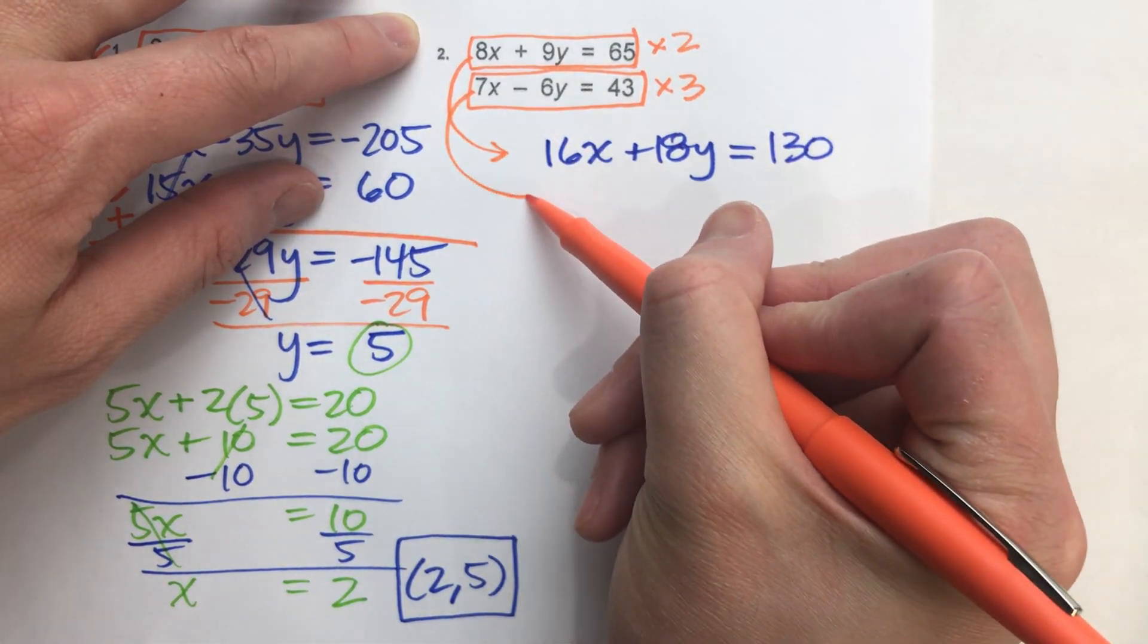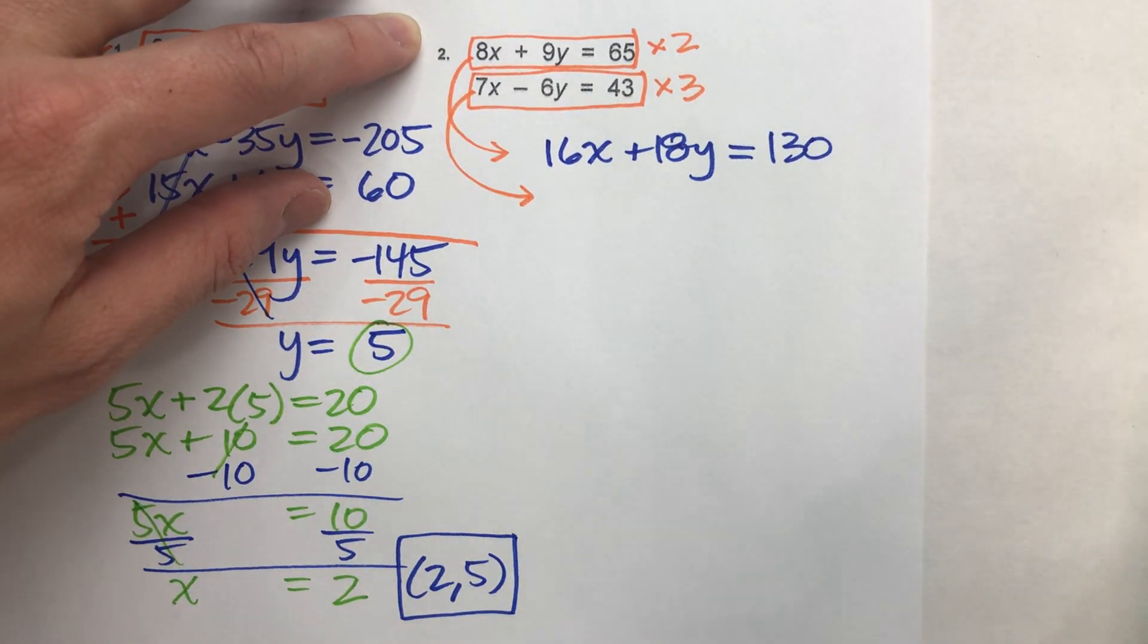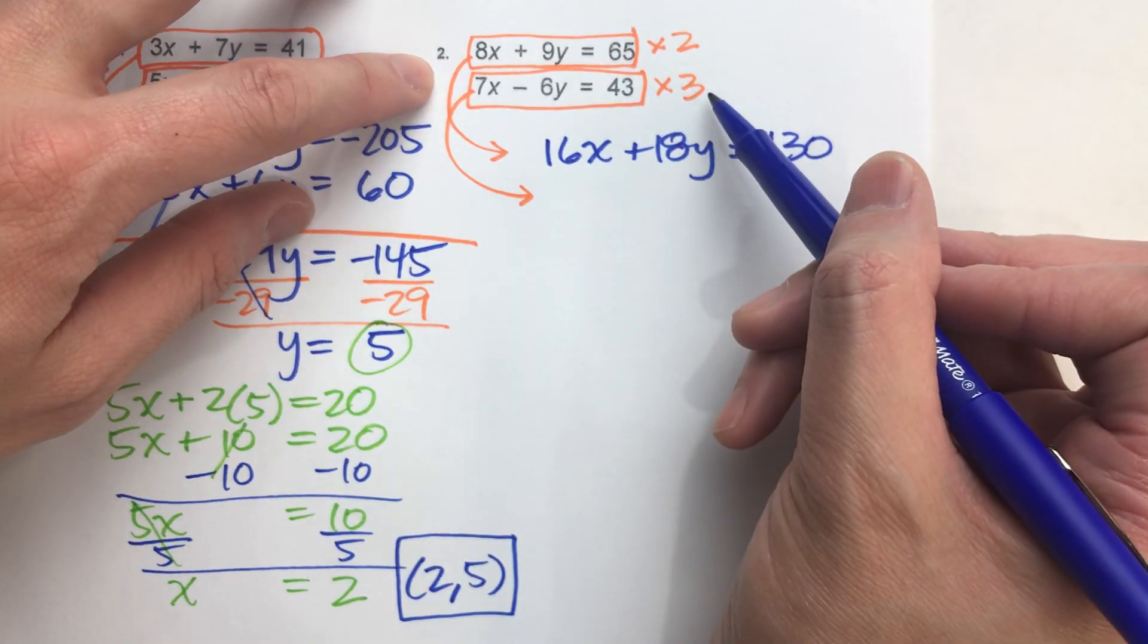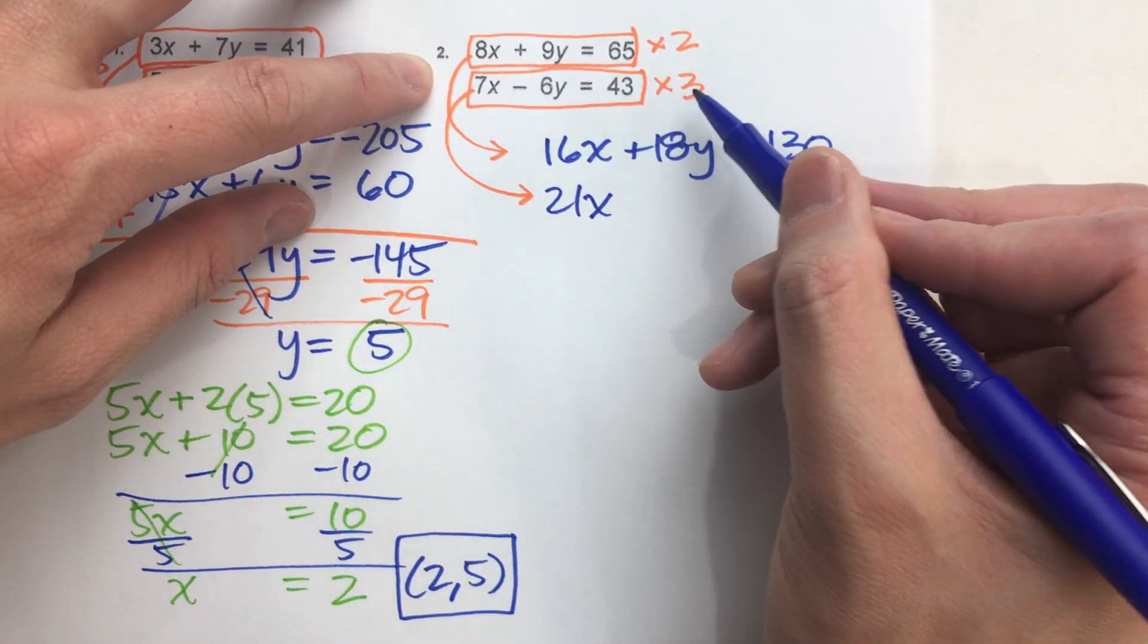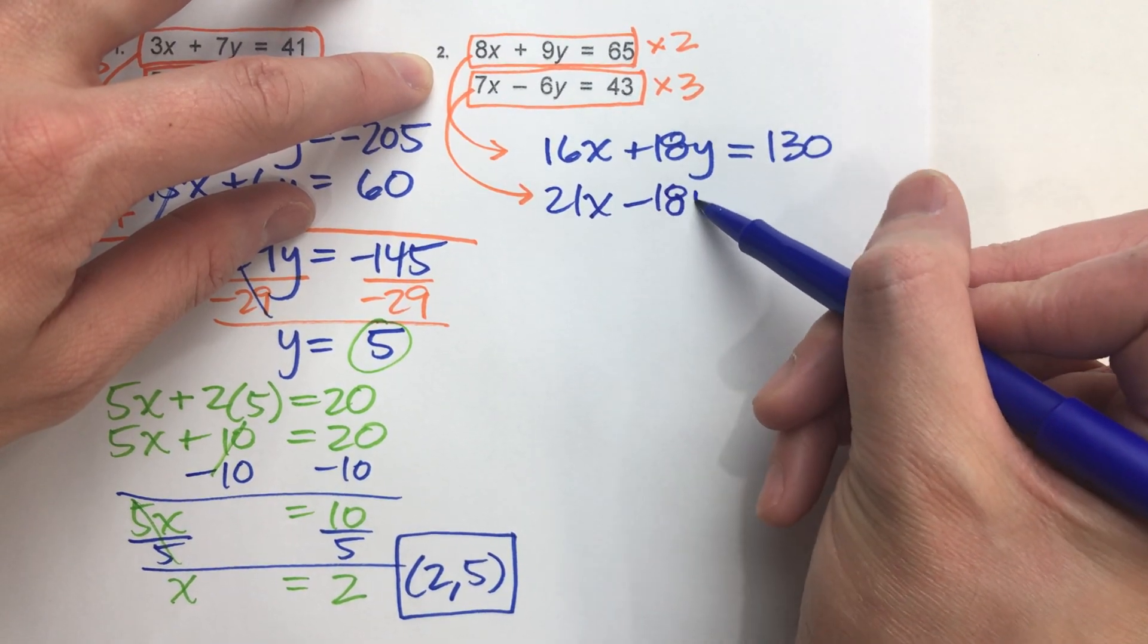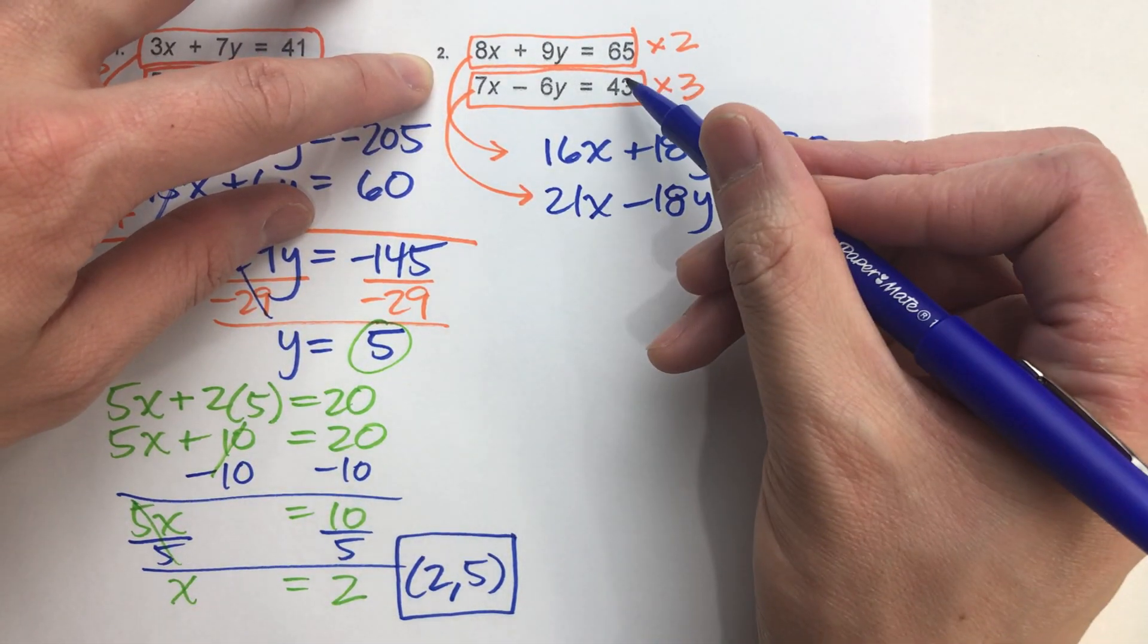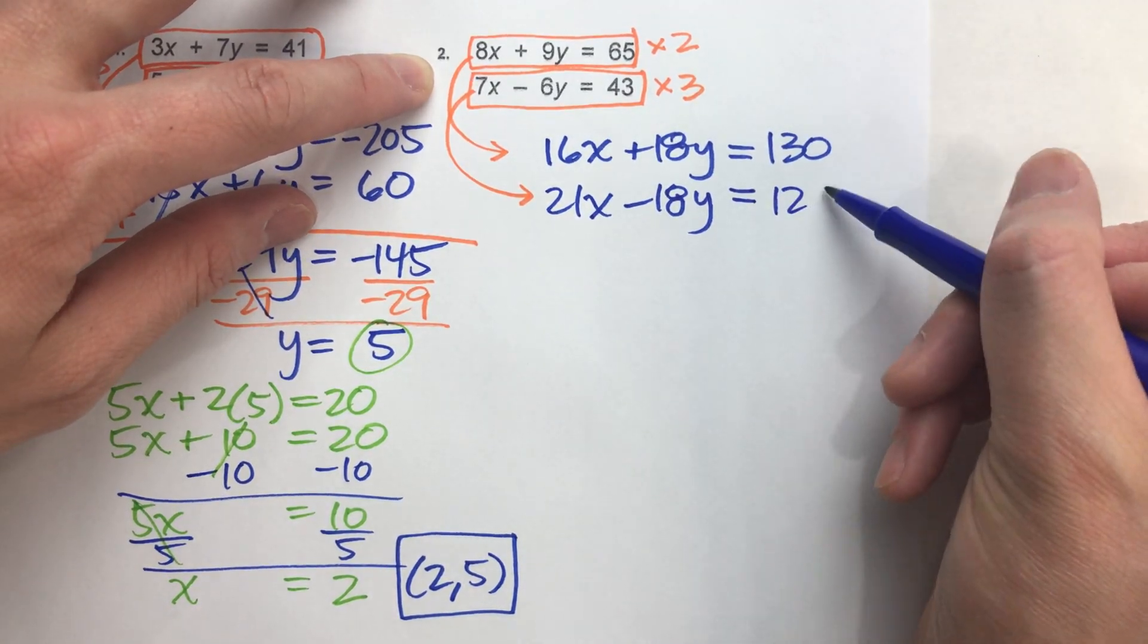For the second equation, again, I'm multiplying this one by 3. 7x times 3, 21x, negative 6y times 3, negative 18y, again, strategic. And 43 times 3, 129.